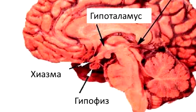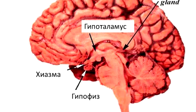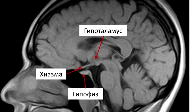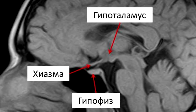This is what the anatomical preparation of the main brain looks like, on which you can see the chiasm, pituitary gland and hypothalamus. As a result of magnetic resonance imaging of the brain, we obtain extremely realistic images, very similar to an anatomical specimen.